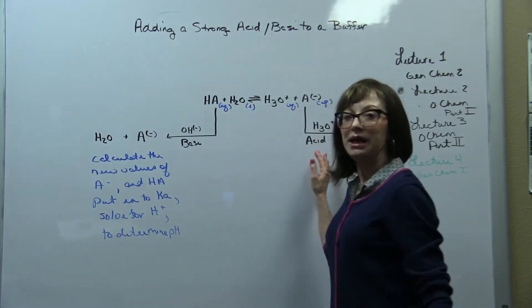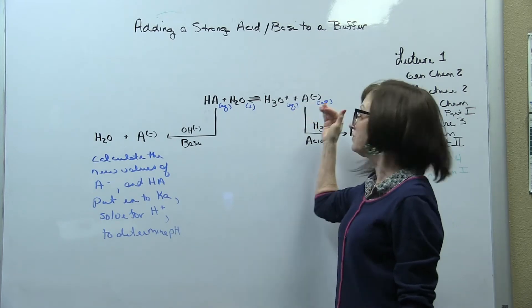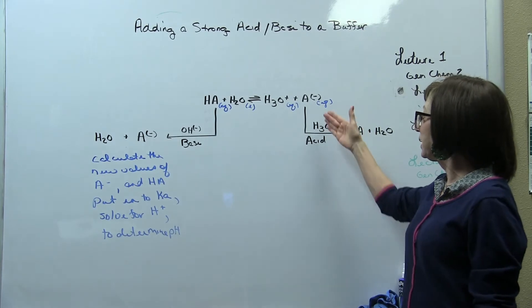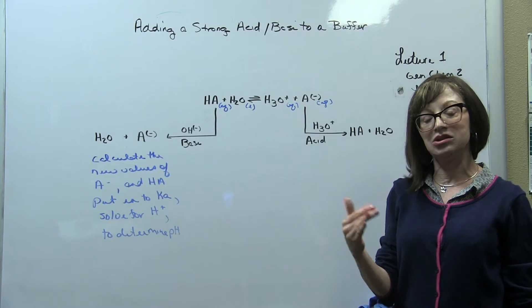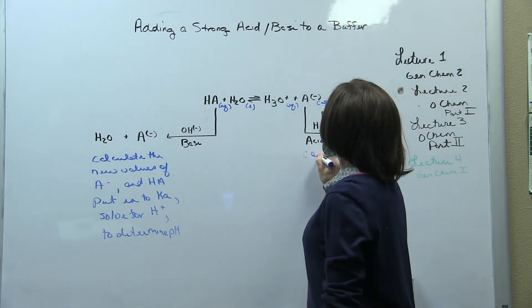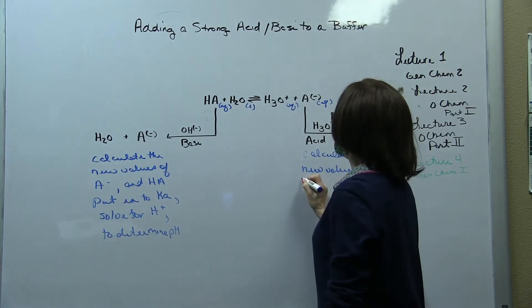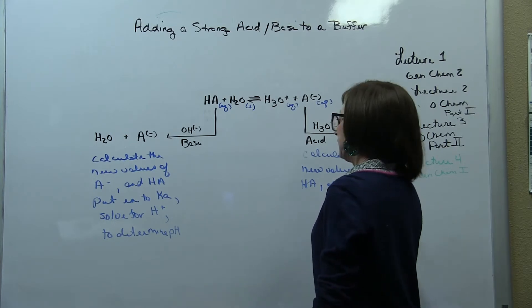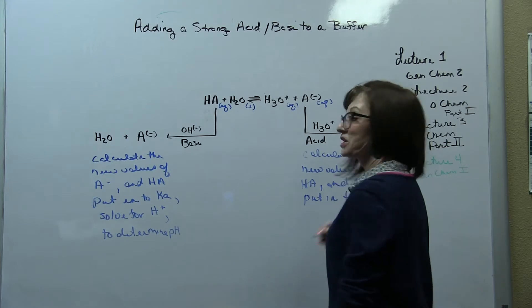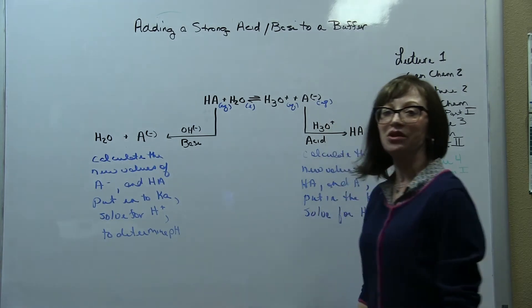But what happens when we add H3O plus to our equilibria? Well, H3O plus is going to react with A minus, the conjugate base. Remember, an acid reacts with a base, and that's going to generate HA and water. So when we get done solving that, again, we're going to have to look at the limiting reagent to solve that and to see what our quantities are. Then we're going to do the same thing. Calculate the new values of HA and A minus, and again, place into the KA expression and solve for H plus. And then, of course, we know that the pH is the negative log of H plus.